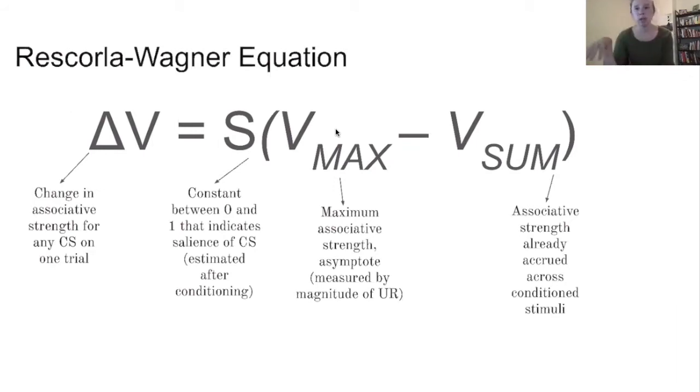Once you've got that salience, you're multiplying by the maximum possible associative strength. So that would be the same magnitude as the unconditioned response. If you remember from our discussion earlier in class today, the magnitude of that conditioned response is never going to be higher than the magnitude of the unconditioned response. So this is the maximum possible associative strength. It's when the unconditioned stimulus and the now conditioned stimulus would elicit the same magnitude of response.